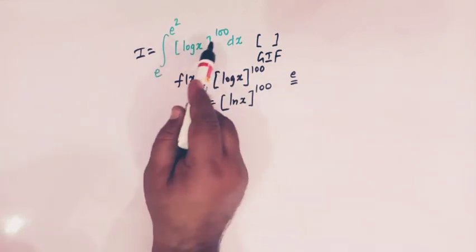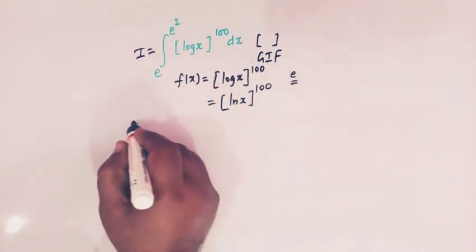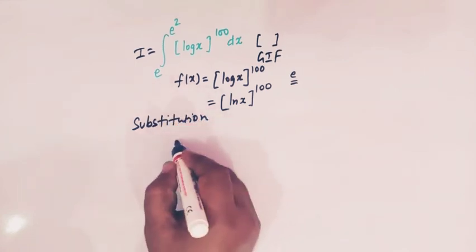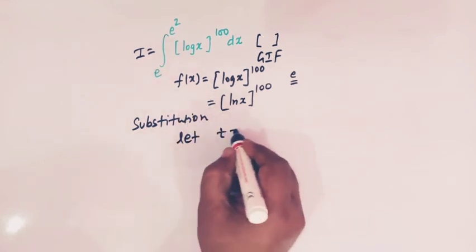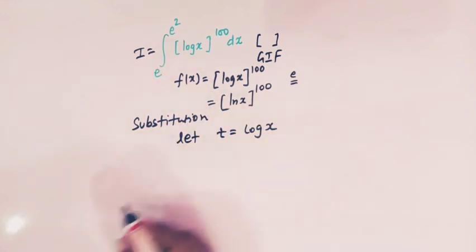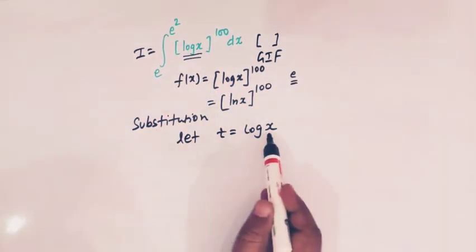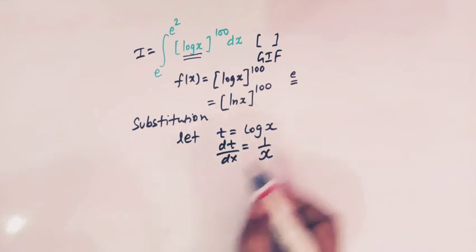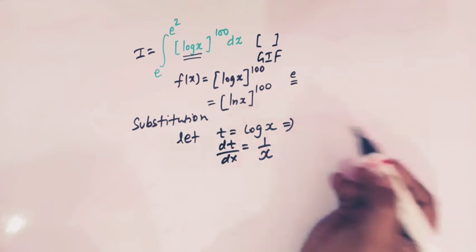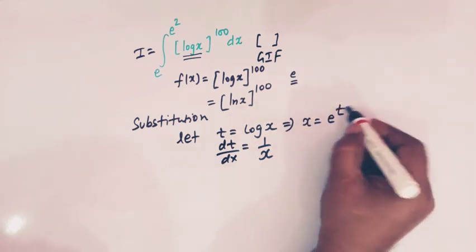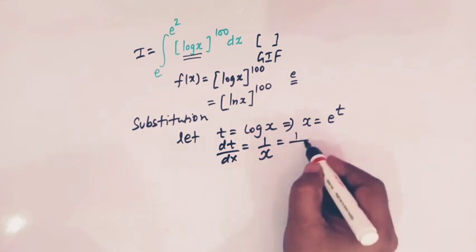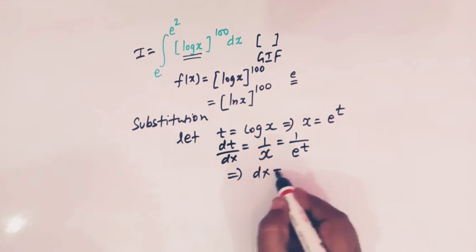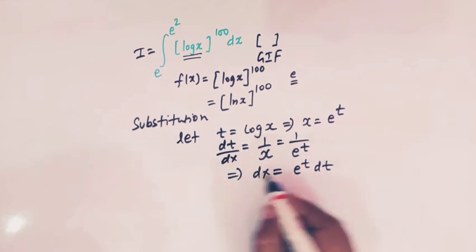Now let us start. Here we will make use of the method of substitution and let us substitute t is equal to log x. So dt over dx is equal to 1 over x. From t is equal to log x, we can write x is equal to e raised to t. So we have 1 over e raised to t, and this expression gives us dx is equal to e raised to t dt.